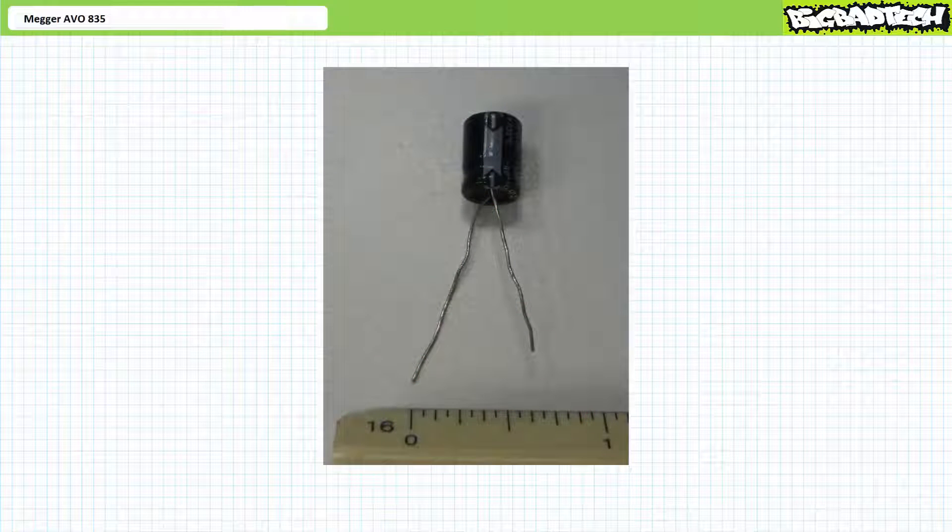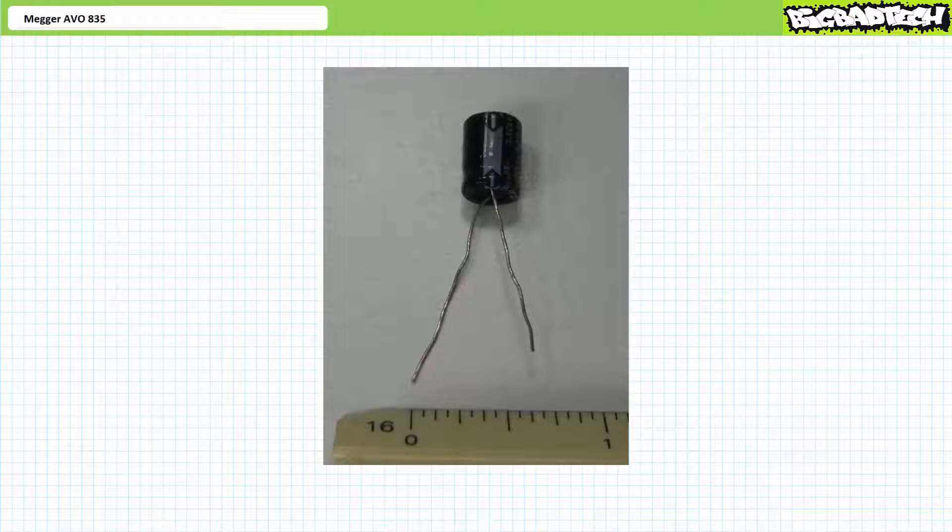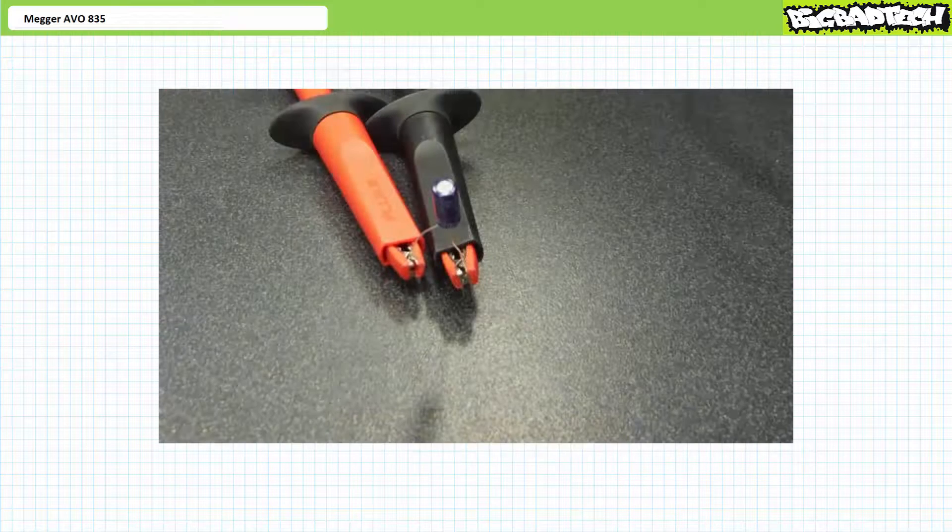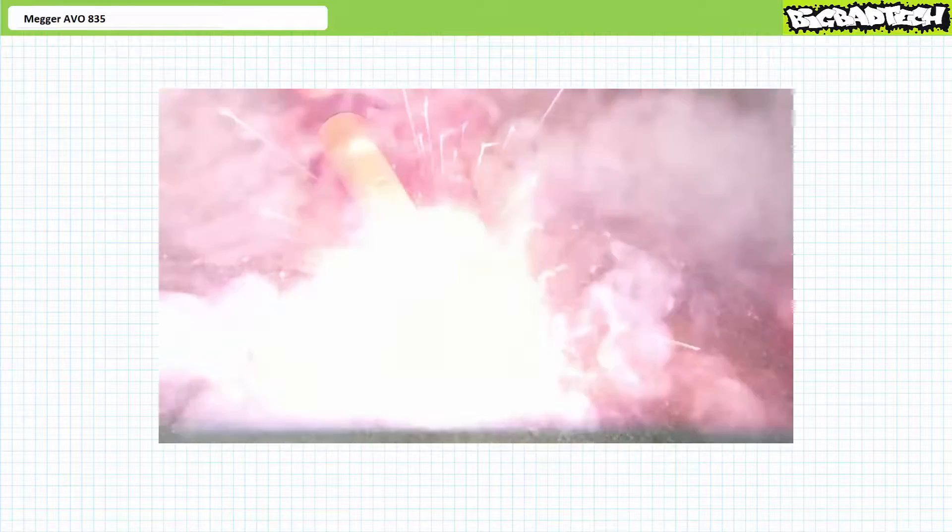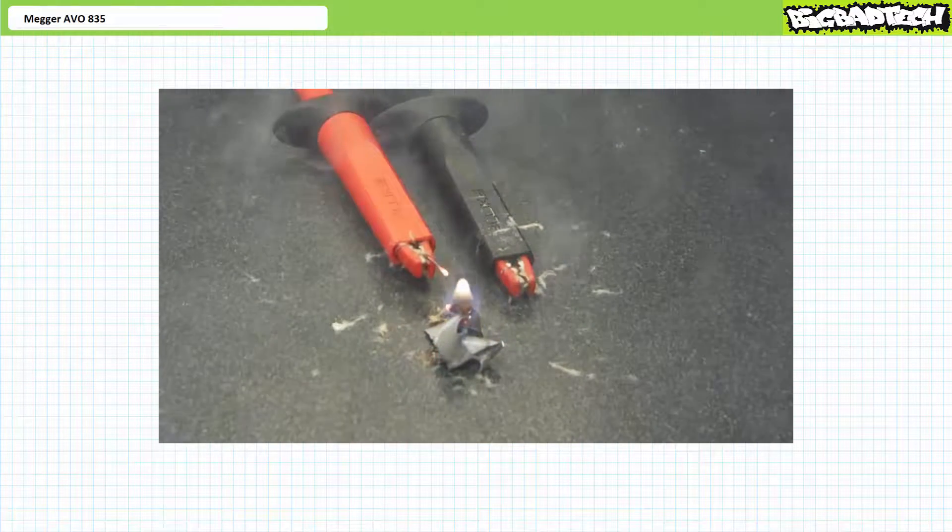Electrolytic capacitors, identifiable by their characteristic cylindrical shape, are polarized. Meaning one lead is specified positive and the other negative and will not function as intended and may catastrophically rupture if hooked up backwards.